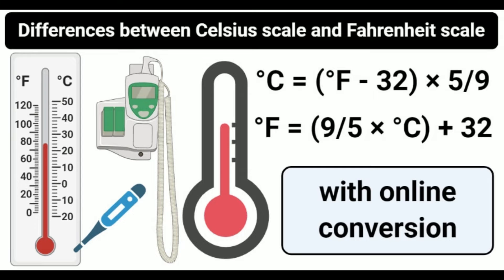Fahrenheit scale definition. Fahrenheit scale is a temperature scale that is based on the freezing point of water at 32°F and the boiling point of water at 212°F. The scale was introduced by and also named after the physicist Daniel Gabriel Fahrenheit in 1724. This scale uses the symbol °F.